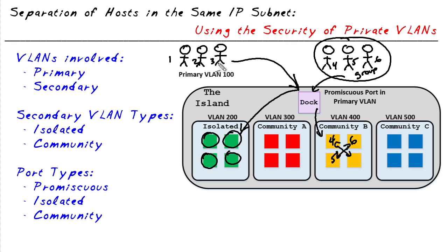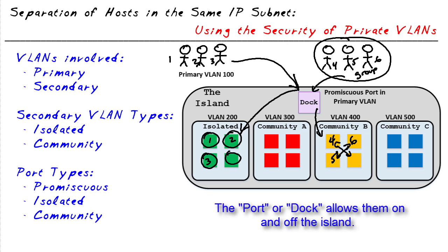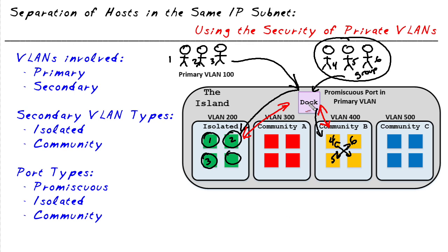The individuals who chose the isolated option can see no one else — not person four, five, or six, nor person two or person three, because they're in this special isolated portion. However, something is common between all of these individuals: they all have access to the port, because they want to leave the island and that's how they get back where they came from.